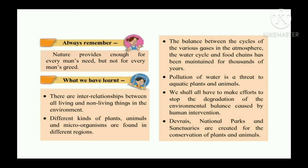What we have learned: there are interrelationships between all living and non-living things in the environment. Different kinds of plants, animals, and microorganisms are found in different regions. The balance between the cycles of various gases in the atmosphere, the water cycle, and food chains has been maintained for thousands of years. Pollution of water is a threat to aquatic plants and animals. We shall all have to make efforts to stop the degradation of environmental balance caused by human intervention. Devrais, national parks, and sanctuaries are created for the conservation of plants and animals. I hope all of you are clear with the lesson. Thank you, children.